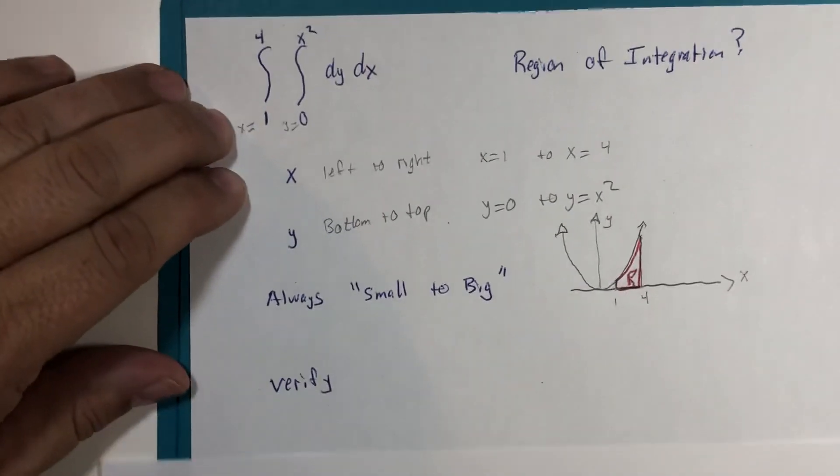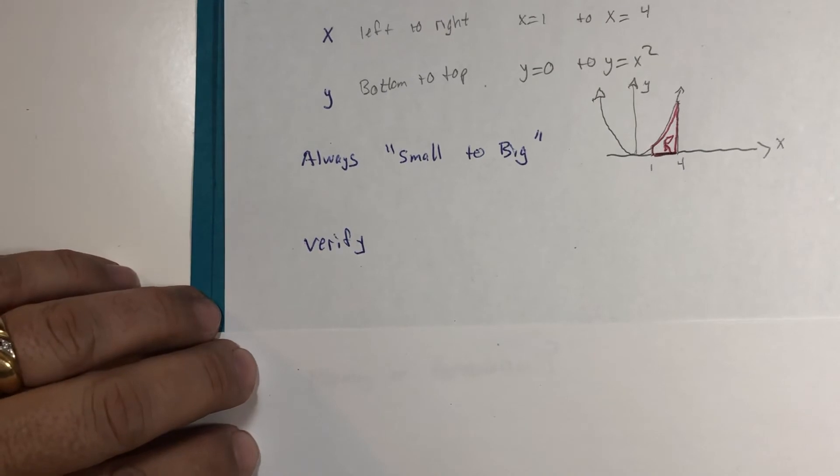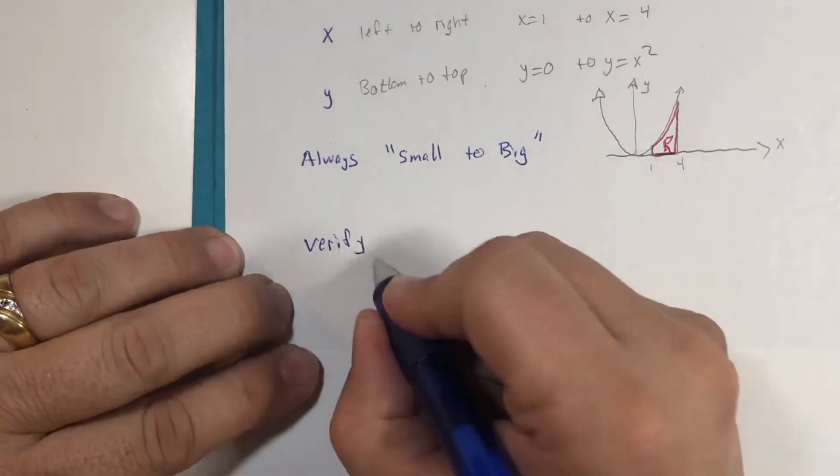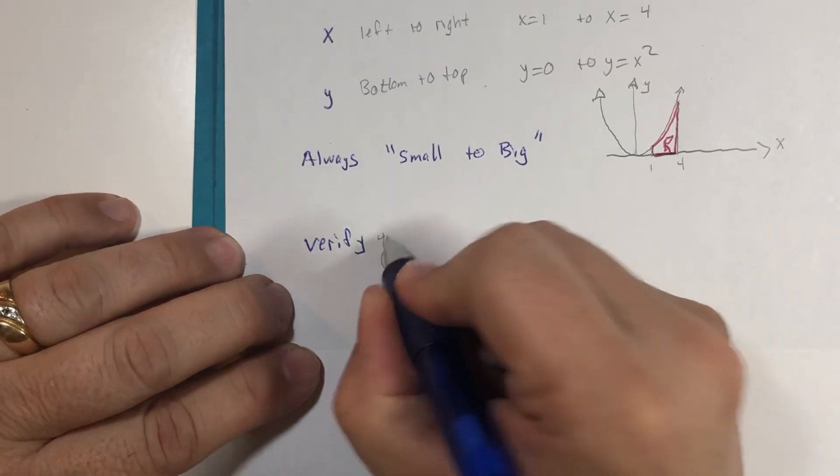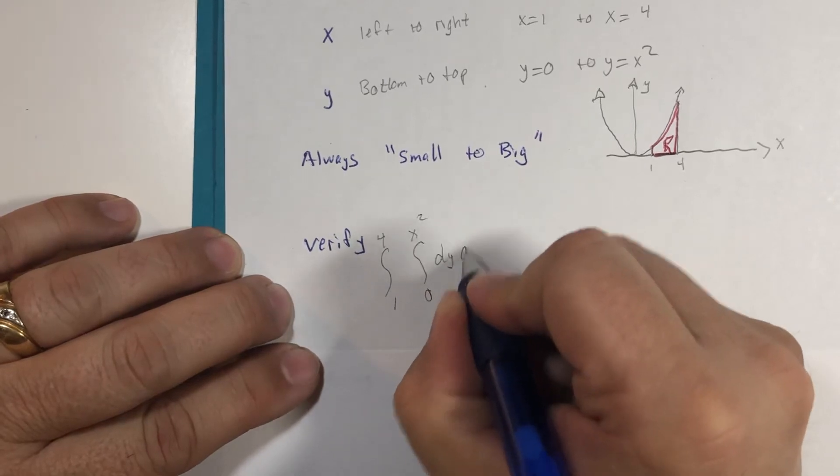Now we can do a little check and make it similar to calculus one. From one to four, from zero to x squared, dy dx.